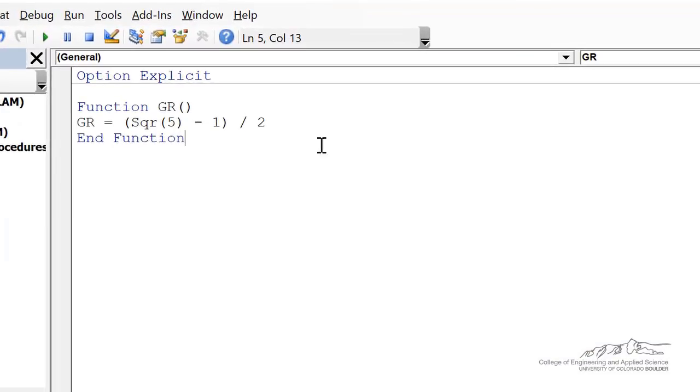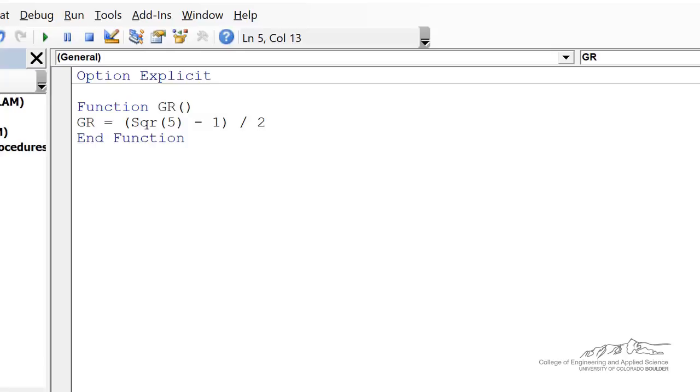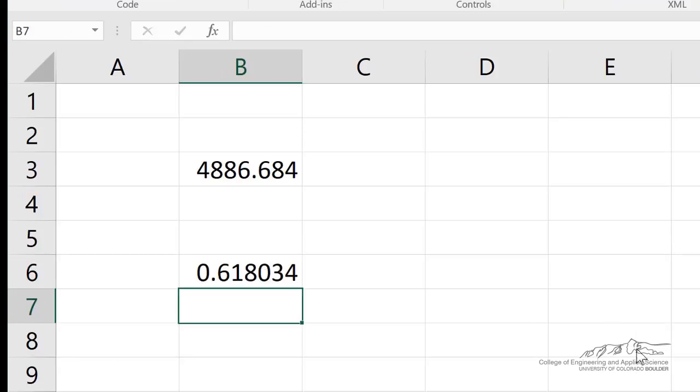Real quick, I wanted to show you an example of a function with no arguments. This would be similar to pi. The golden ratio is equal to the square root of 5 minus 1 divided by 2. It's just sort of a number. I could define a function, gr, which will just give us the number, so .618.